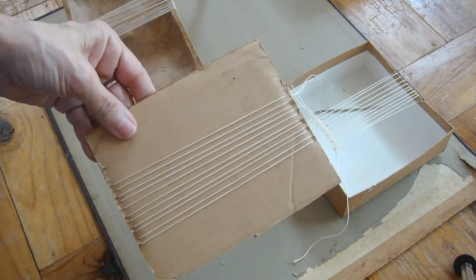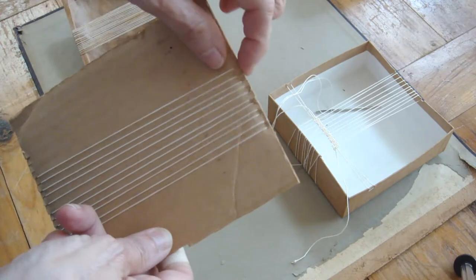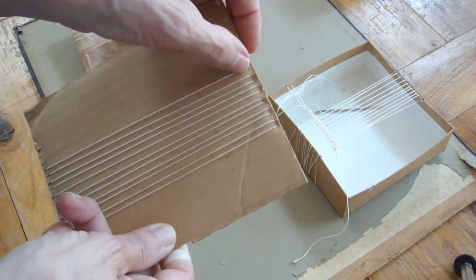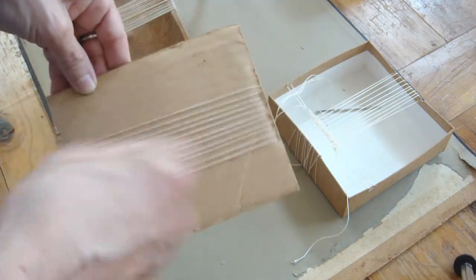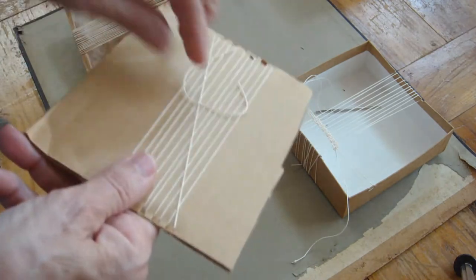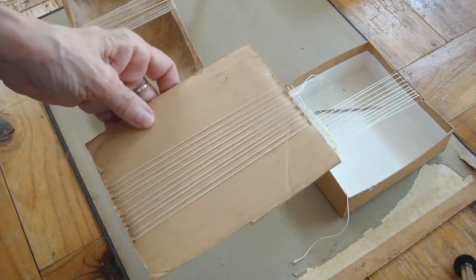These cardboard looms are one of the easiest things. You can cut some little slits in the top to hold the thread in place. Wind a bunch of thread and tie it so that it's tight. I don't like this method.